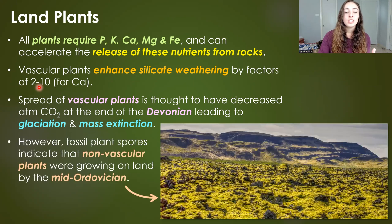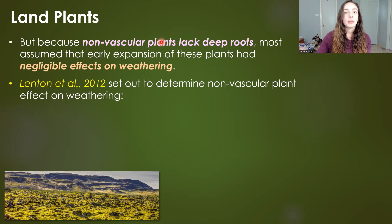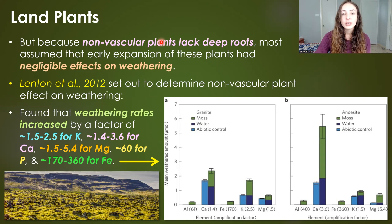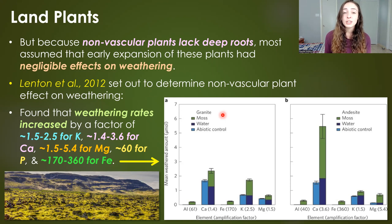Less attention has been given to how nonvascular plants affected the Ordovician mass extinction event. Although fossil spores indicate nonvascular plants were growing on land by the mid to late Ordovician, nonvascular plants are often assumed to have negligible effects on weathering because they lack roots. However, a 2012 paper found that weathering rates were increased by factors of 1.5 to 2.5 for potassium, 1.4 to 3.6 for calcium, 1.5 to 5.4 for magnesium, and 170 to 360 for iron. So even nonvascular plants like mosses can significantly enhance weathering and carbon sequestration.